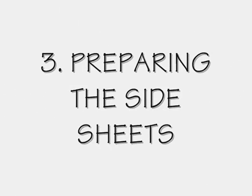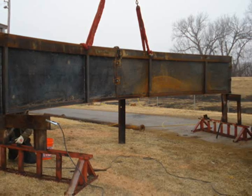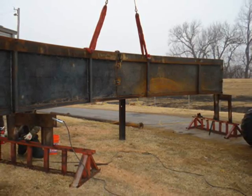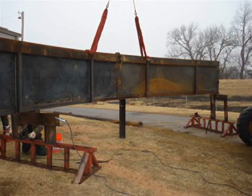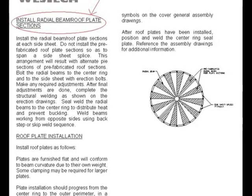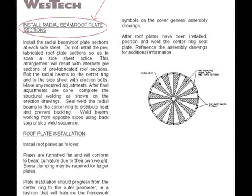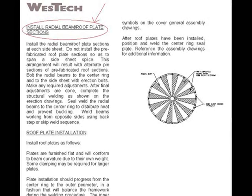Number three, preparing the side sheets. Assemble and true up the side sheets. Do not weld side sheets together until completing the installation procedures for the prefabricated radial beam roof plate sections. Cribbing or scaffolding may be necessary to ensure the side sheet sections are level.